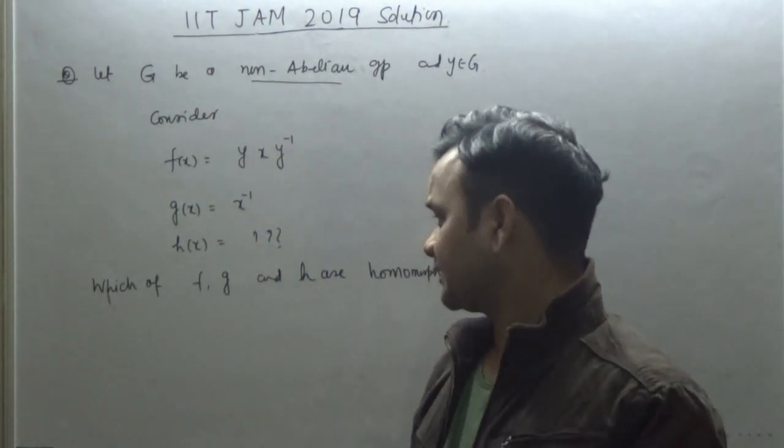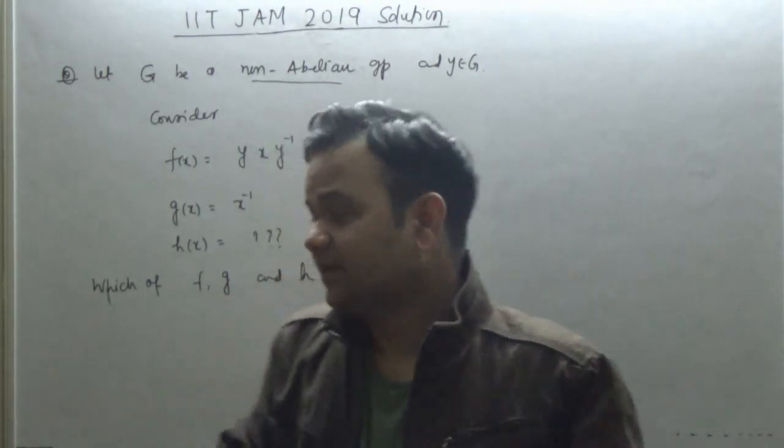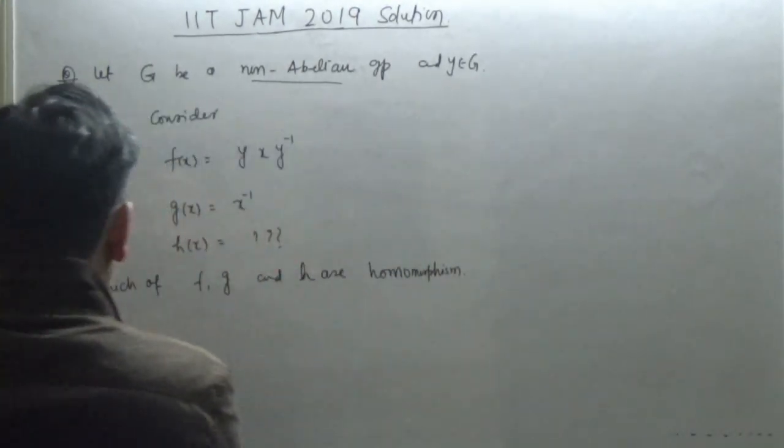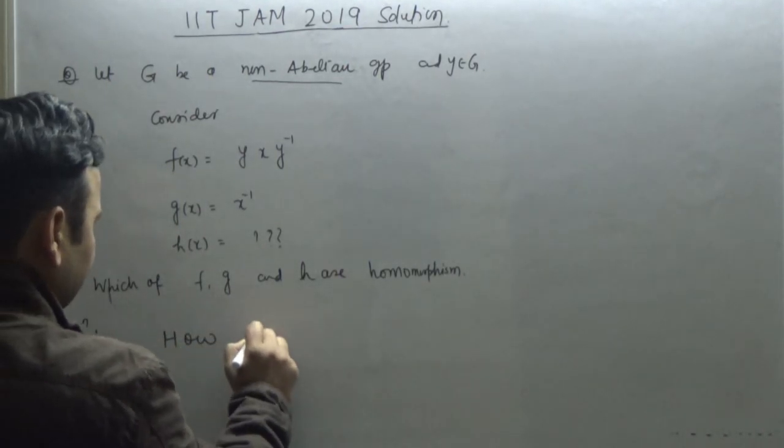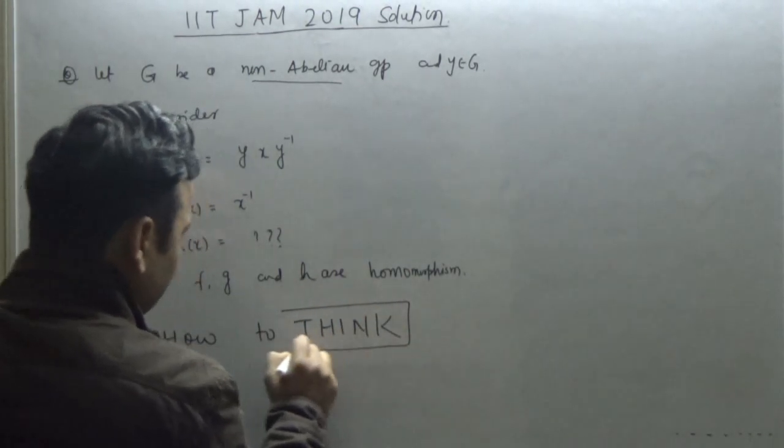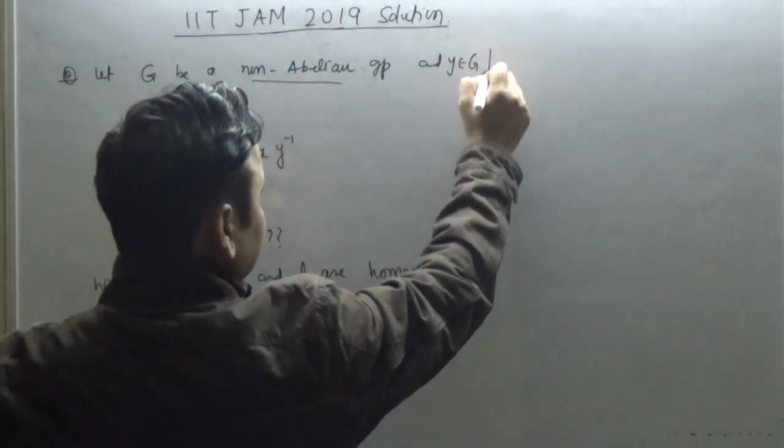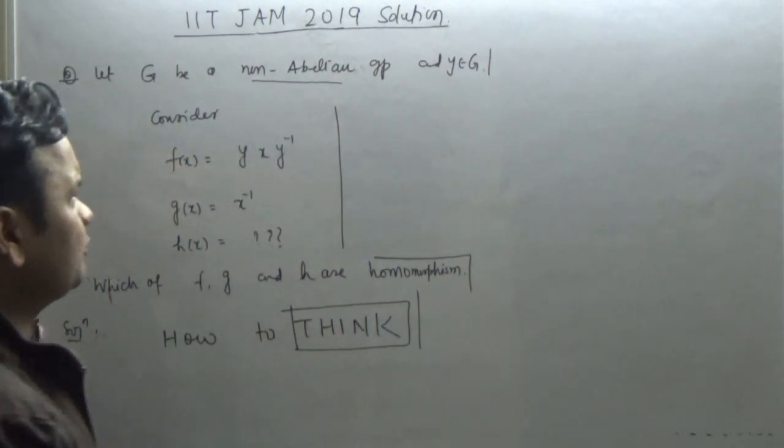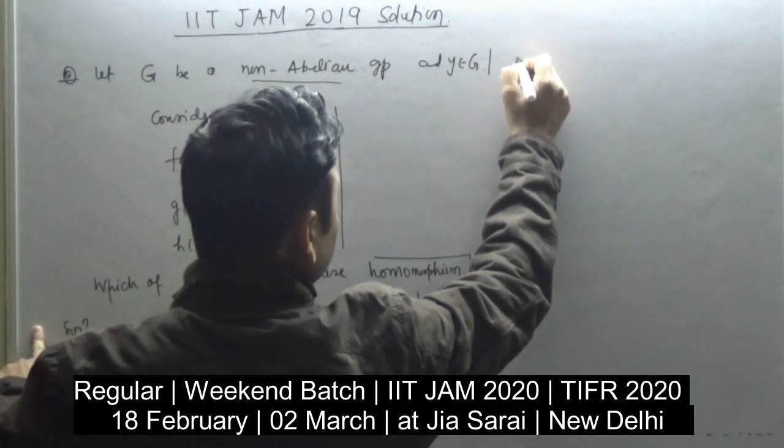What should our approach be for this kind of problem? How to think through this? The group is given, a non-abelian group. Let's see the solution.